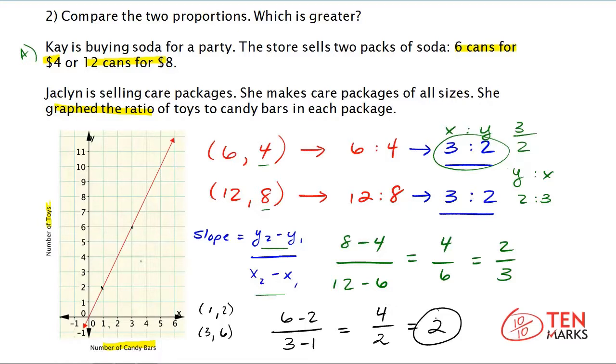Now compare. Kay's proportion is 2... Oh, I'm sorry. Jacqueline's proportion is 2. Kay's proportion is 2 thirds, which is greater. 2 is greater than 2 thirds. 2 thirds is just a fraction, and 2 is a whole number.